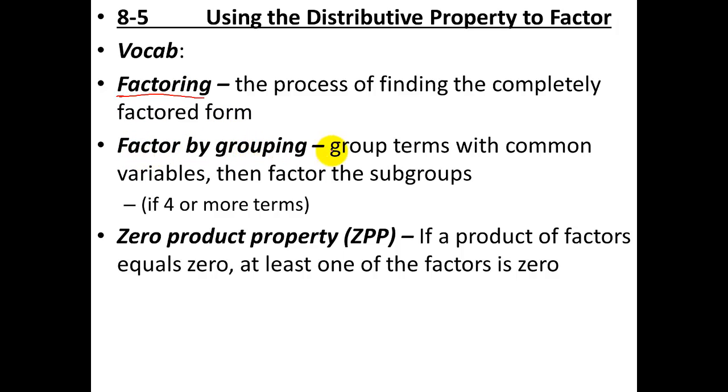There's a couple of ways you can do this. One is called factor by grouping. In this case, you group terms with common variables and then factor out the subgroups. And the other type of factoring is just normal factoring.